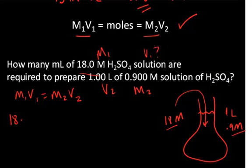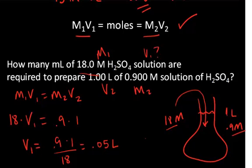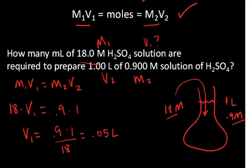So it's going to be 18 times V1 equals 0.9 times V2 which is 1. I've left off the units for clarity here. V1 then is going to equal 0.9 times 1 divided by 18 which equals 0.05 liters. So the units there are liters because I have moles per liter times liters.